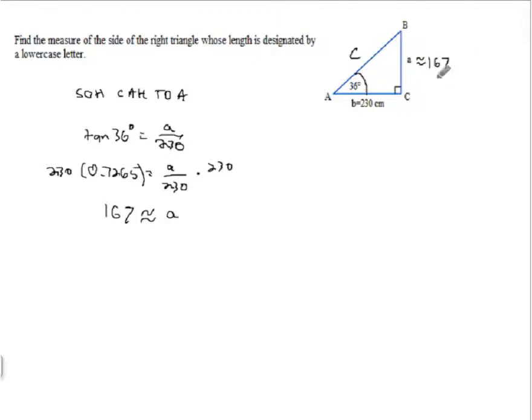Now, I could use Pythagorean theorem to figure out C, but the disadvantage of that is that I would be using a rounded answer to get another answer, which is going to increase on the error of rounding. So, it would be best to find C by using trigonometric functions again. So, if I want to find C in relationship to 36 degrees, C is the hypotenuse. So, I'm going to have to either use sine or cosine because those are the two that use the hypotenuse. Again, I don't want to use this 167 because that's rounded.